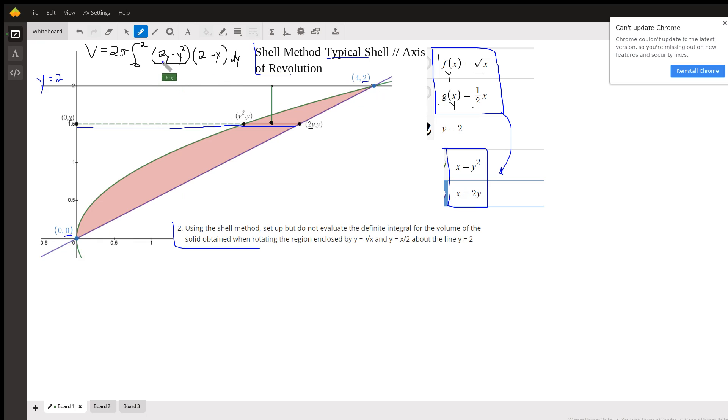Now what is this 2y minus y squared? Well, that's the length of this red segment for infinitely many segments along the interval from zero to two. We can find that horizontal distance by taking the x coordinate at the right minus the x coordinate at the left.